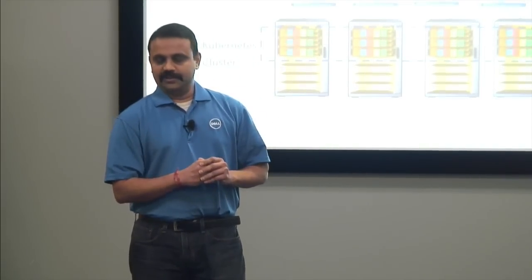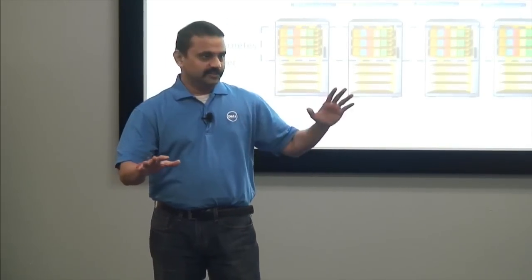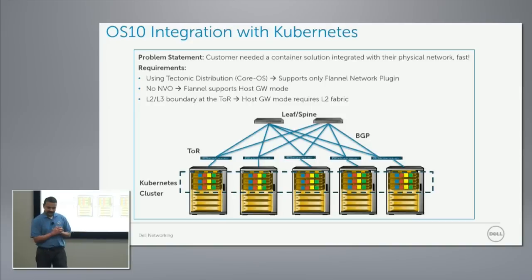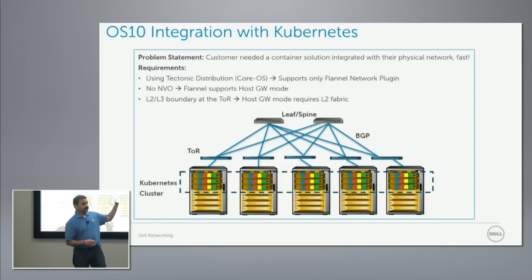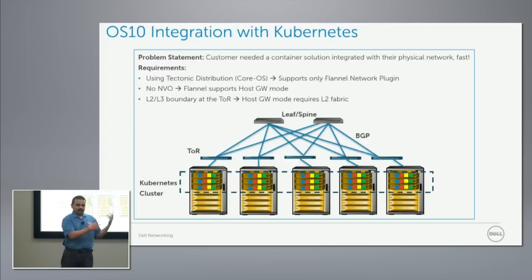Then virtual networks came into the picture. We separated the physical networks and the virtual networks. The idea was that any changes on the physical network should not affect the virtual and vice versa. So all the DHCP was happening from the virtual world. Any VM coming up on the virtual world gets an IP address assigned on the virtual subnet, and these virtual subnets have no understanding of the physical, and the physical does not understand the virtual IP.